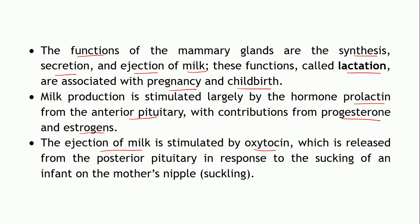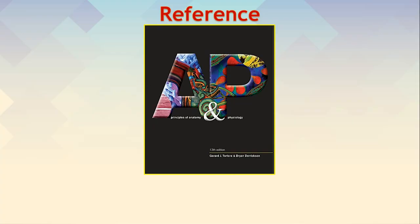Oxytocin is released from the posterior pituitary in response to the suckling action of the infant. As the infant sucks the mother's nipple, signals are sent to the posterior pituitary, which secretes oxytocin, resulting in milk ejection and lactation. So milk production is controlled by prolactin, and milk ejection is controlled by oxytocin. This concludes the topic of mammary glands. Thank you for watching.